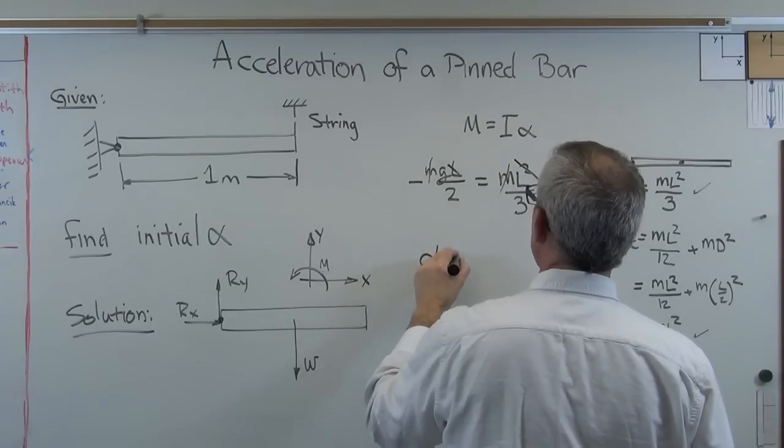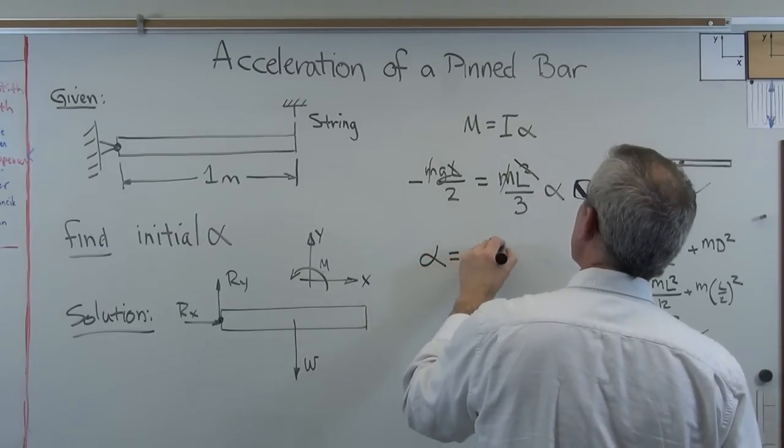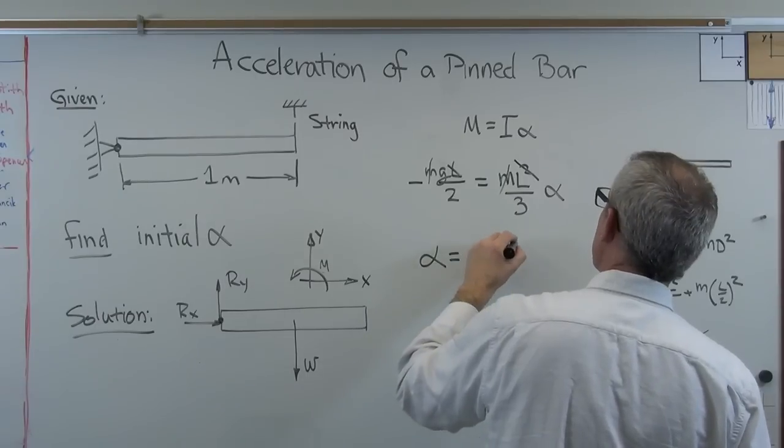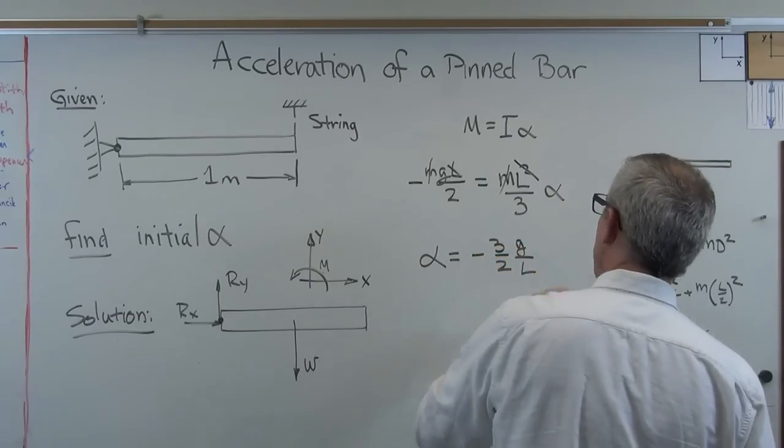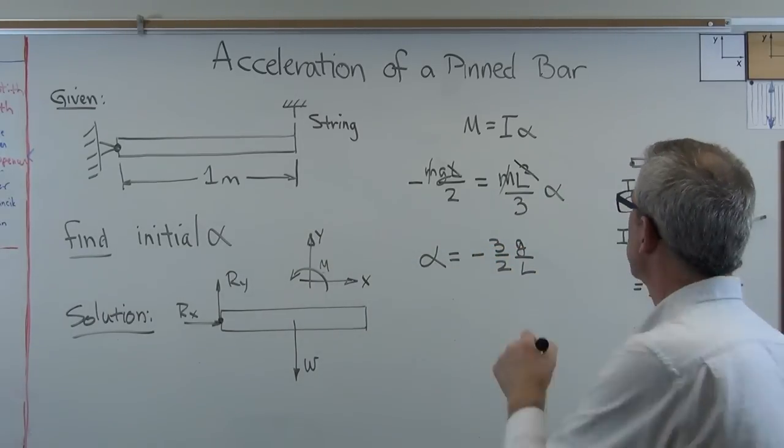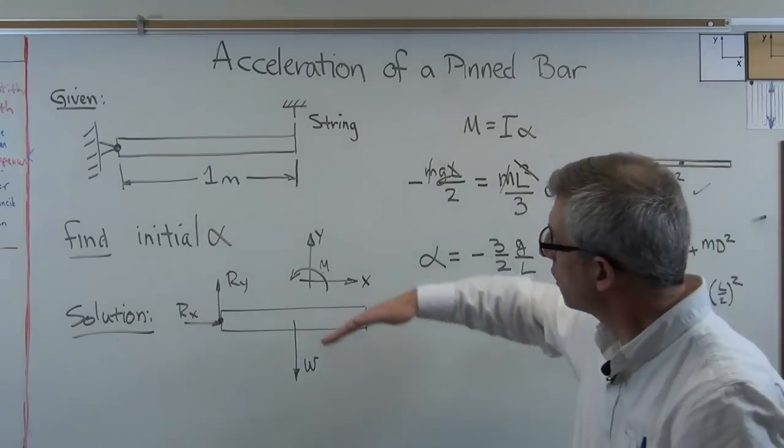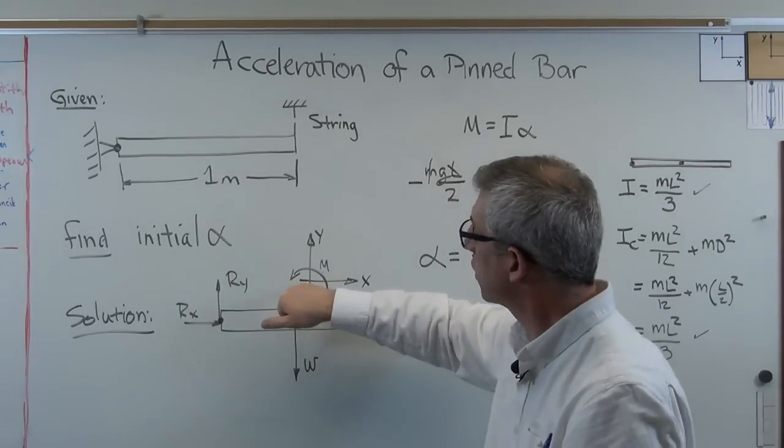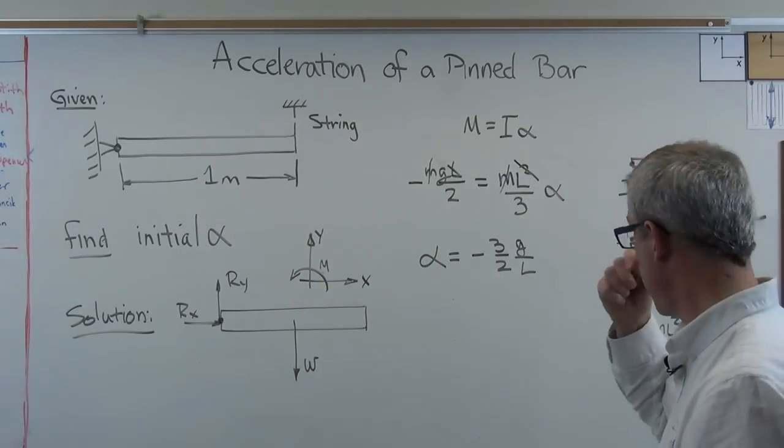And so we solve for alpha. We're going to get a negative 3 over 2 g over L. We've got the negative sign there. This is going to accelerate in the negative direction according to my sign convention. So the math took care of me there.